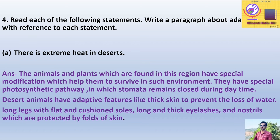They have a special photosynthetic pathway in which stomata remain closed during daytime. Desert animals have adaptive features like thick skin to prevent loss of water, long legs with flat and cushioned soles, long and thick eyelashes, and nostrils protected by folds of skin. An example of such an animal is the camel.